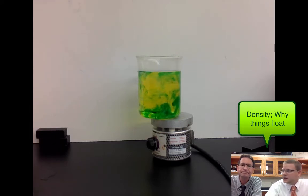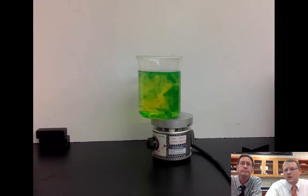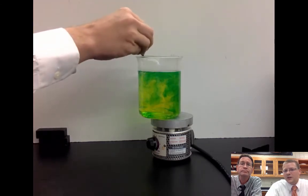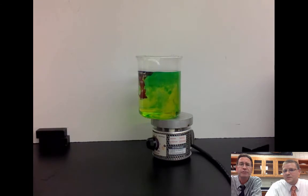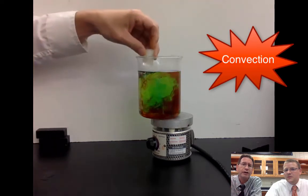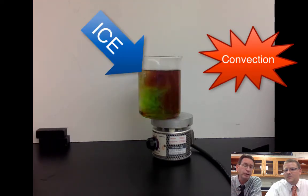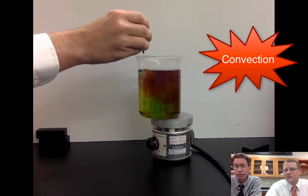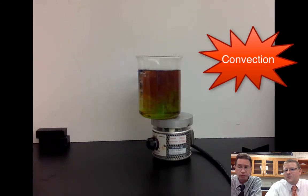Dense things sink and less dense things rise. So we're showing you a couple different colors here. Now we've got red going into the beaker, but it's going to do the same thing because it's the same motion. So this circular pattern is called convection. It's a transfer of energy from hot to cold. You will see this pattern occur in nature over and over again because in every fluid, the more energy you have, the less dense it's going to be, and the more easily it will rise to the top.